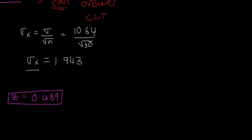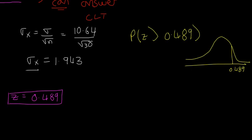We're looking for the probability that z will be greater than 0.489. On a normal distribution curve, 0.489 corresponds to 23 euro, and we want to find this probability here.